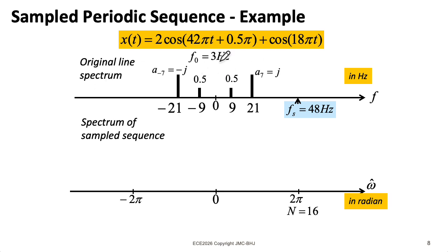On the top here, we've plotted the spectrum of the original continuous time signal. Notice that our frequency axis here is in hertz. So I have a line at 9 and 21, and I have the corresponding complex conjugate lines. Remember, when we go from this cosine form into the complex sinusoid form we use for two-sided spectra, we need to divide by 2. And the j here comes from this phase of 0.5π.